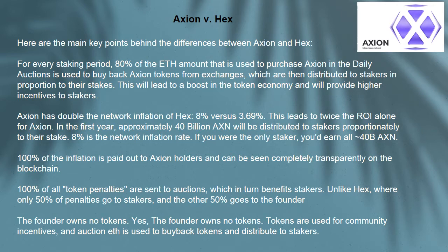100% of the inflation is paid out to Axion holders and can be seen completely transparently on their blockchain. 100% of all token penalties are sent to auctions, which in turn benefits stakers. Unlike HEX, where only 50% of penalties go to stakers,